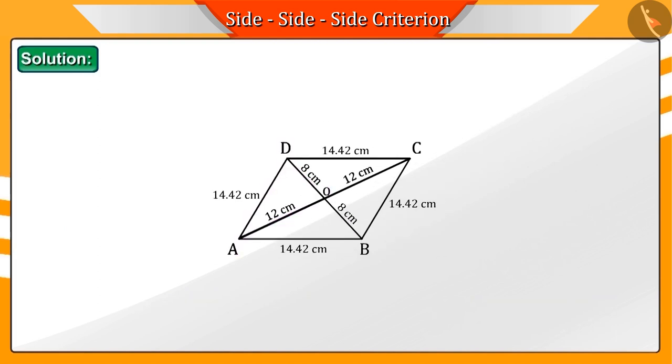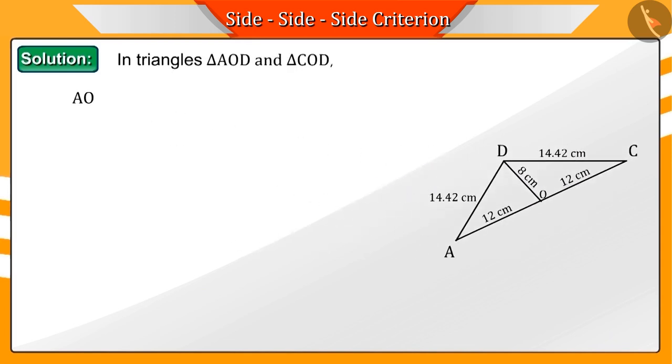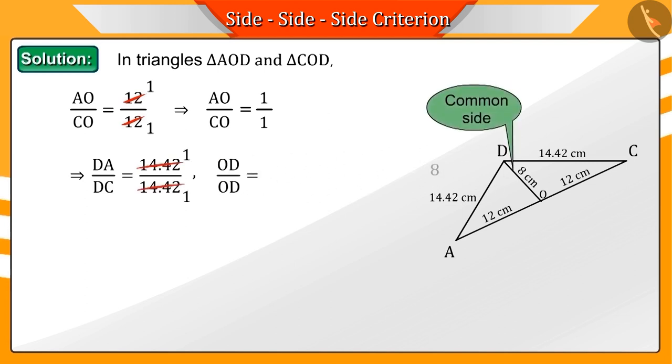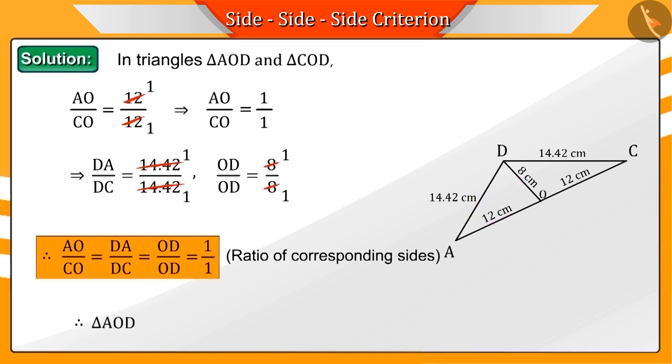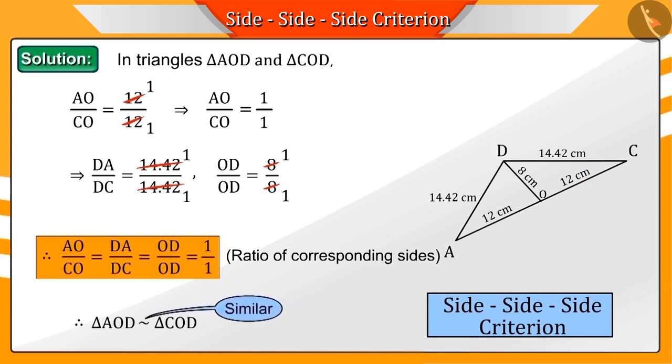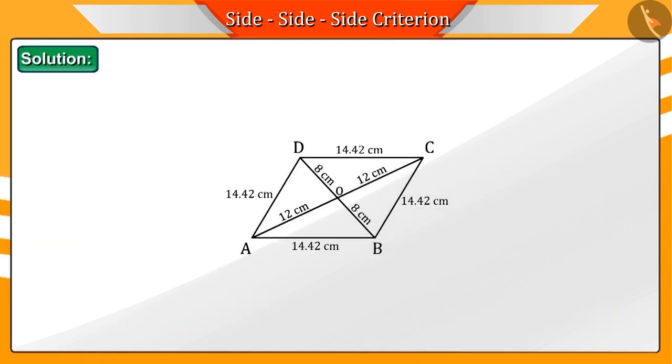Now, if we talk about triangle AOB and triangle COD, the ratio of their corresponding sides are also equal. Hence, you can see that triangle AOD and triangle COD are also similar by the SSS criteria. This way, we can test the similarity of any two triangles in this rhombus. And we can say that all the four triangles, triangle AOB, triangle COB, triangle COD and triangle AOD are similar.